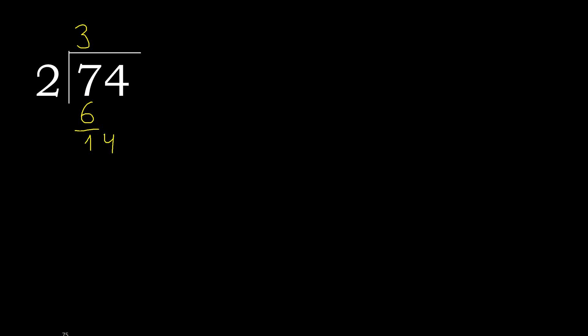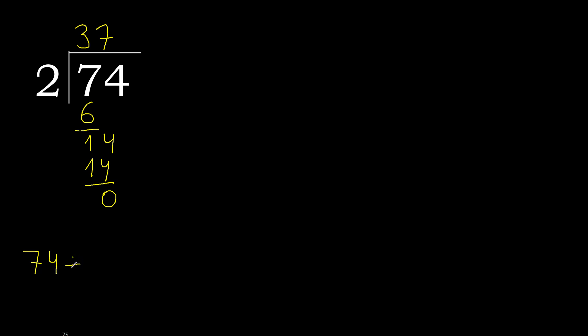Next: 14. 2 multiplied by 7 is 14 — it is not greater. 14 minus 14 is 0. There is no remaining number, so we finish. 74 divided by 2 is 37.